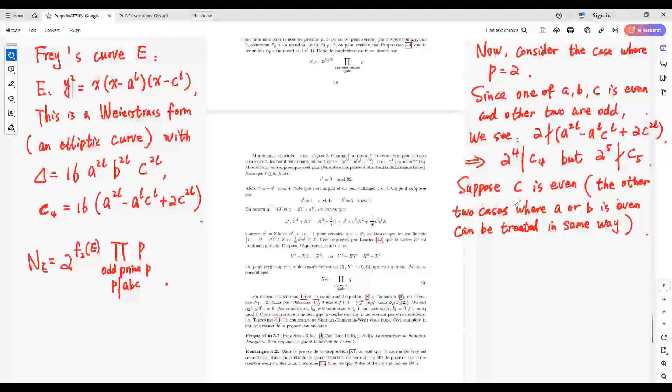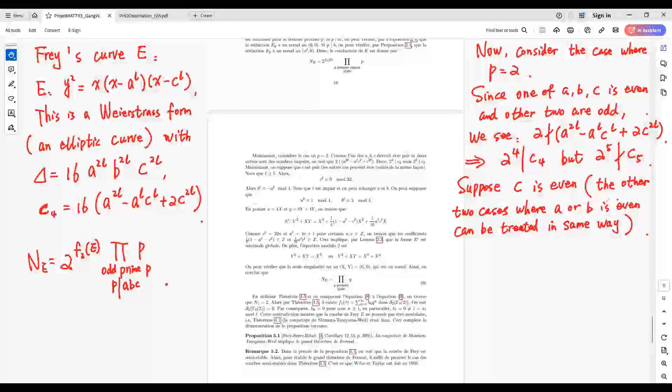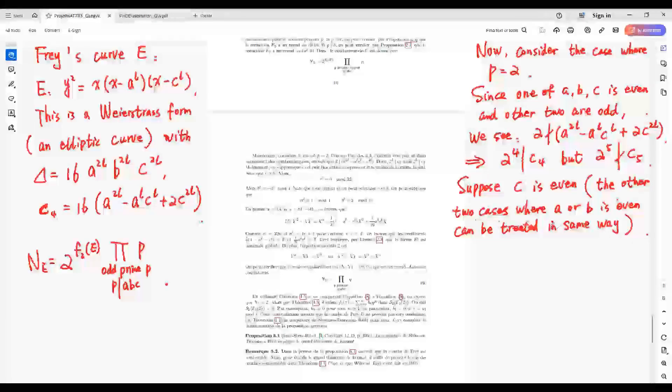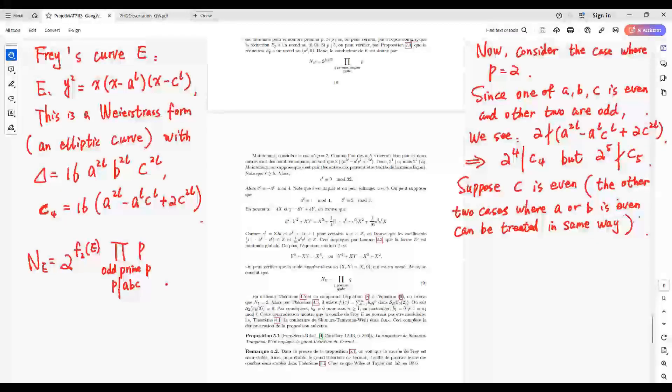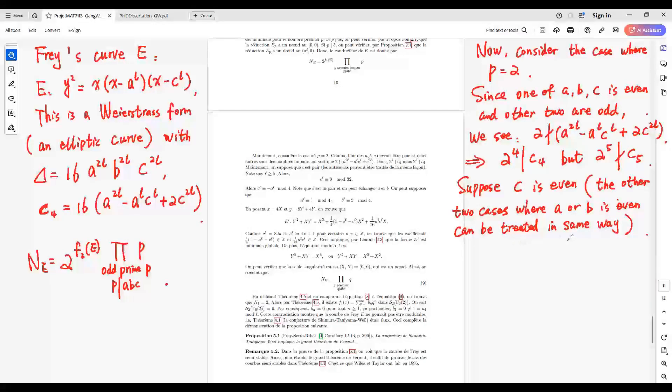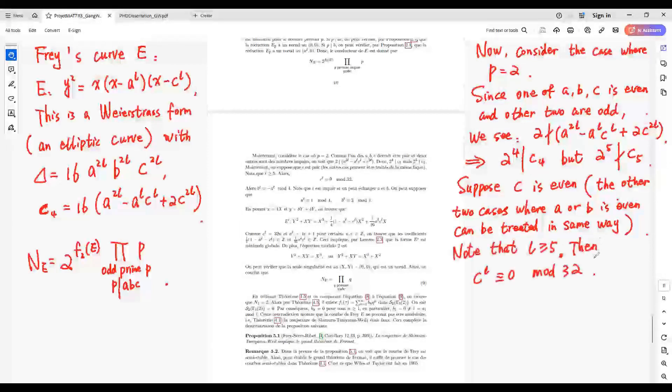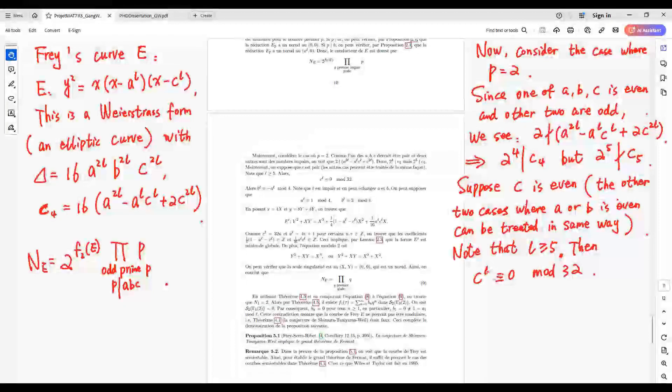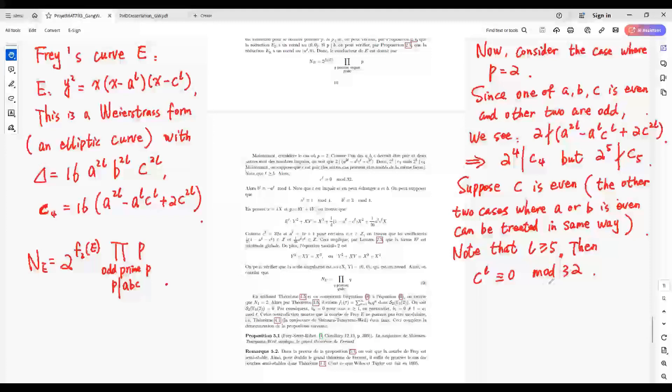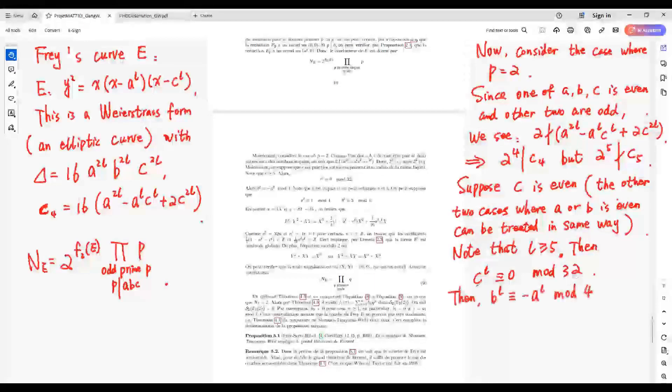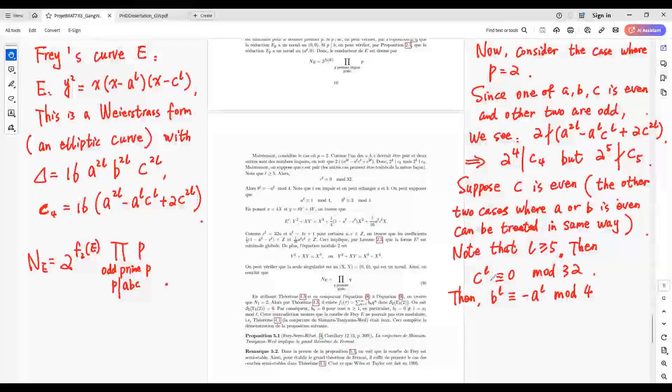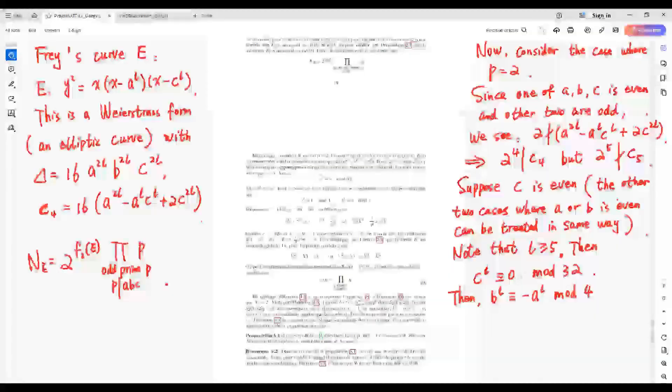Now, we just consider the case C is even. The other two cases, where A or B is even, can be treated in the same way. Then C^L equals 0 modulo 32. Since C^L equals A^L plus B^L.